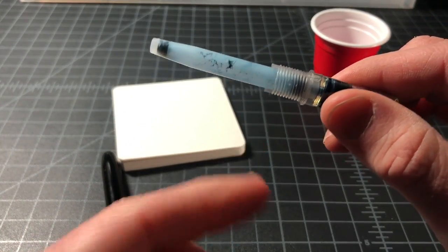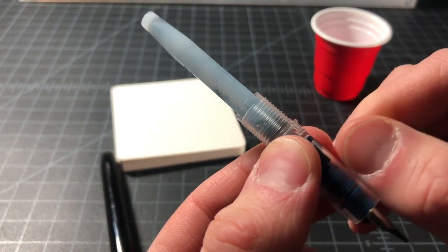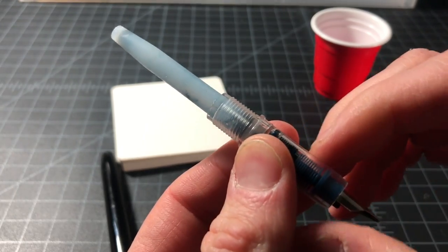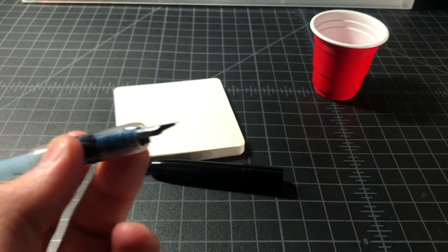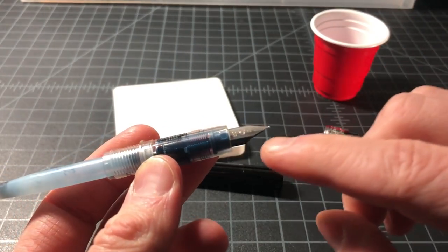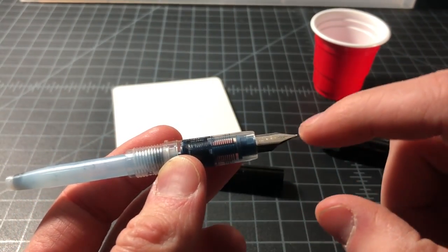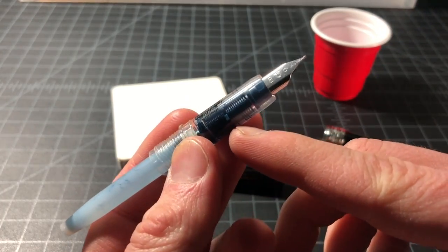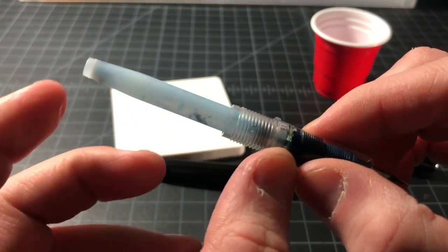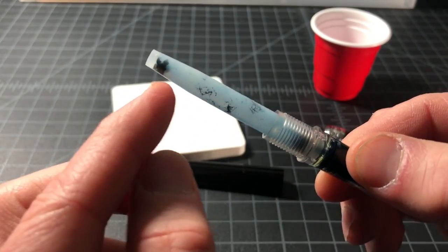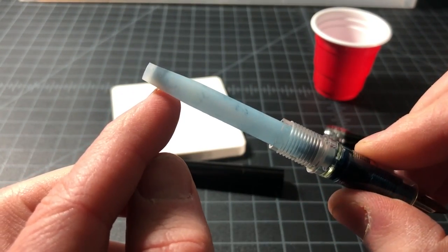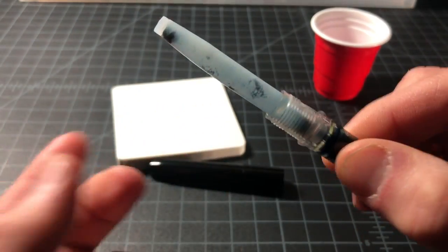Basically what happens is that the ink in a cartridge or converter, any ink, is primarily water. So even if you're not using the pen and even if the cap is sealed, some air will get in and out, some water will evaporate, and over time the water inside your ink will evaporate and you'll get left with the little bits of dye or pigment or whatever is in there. And that's what we have here.